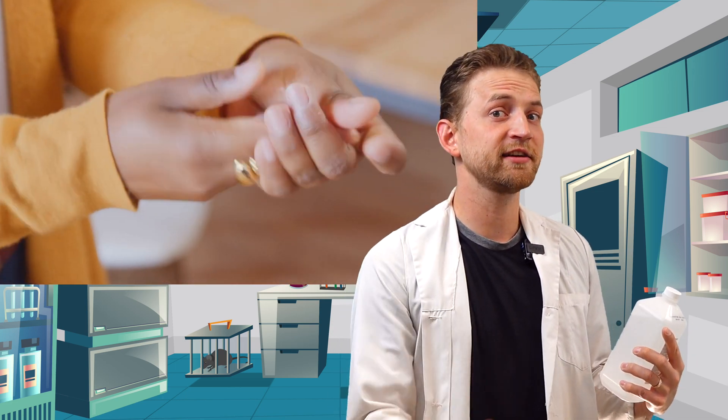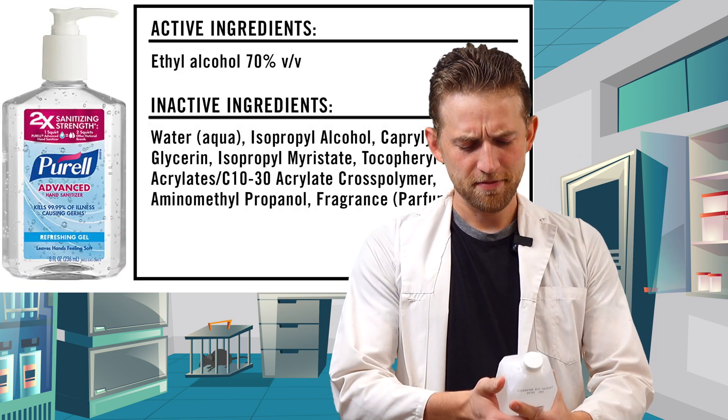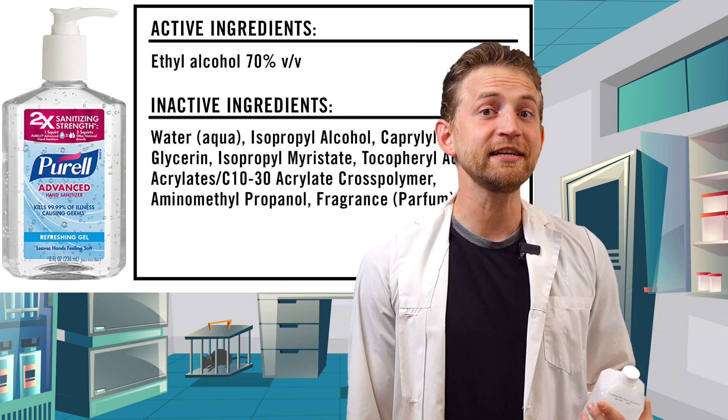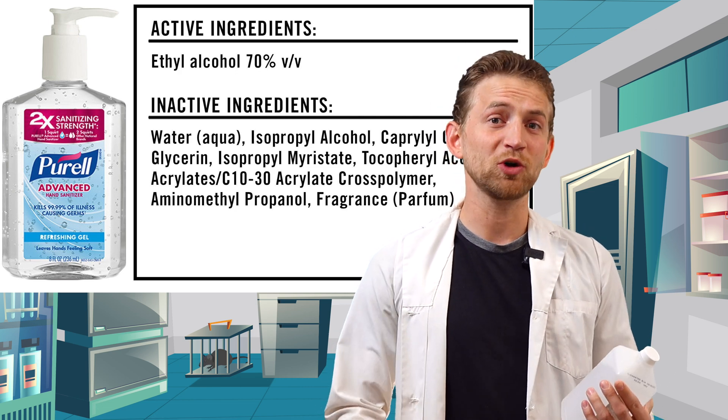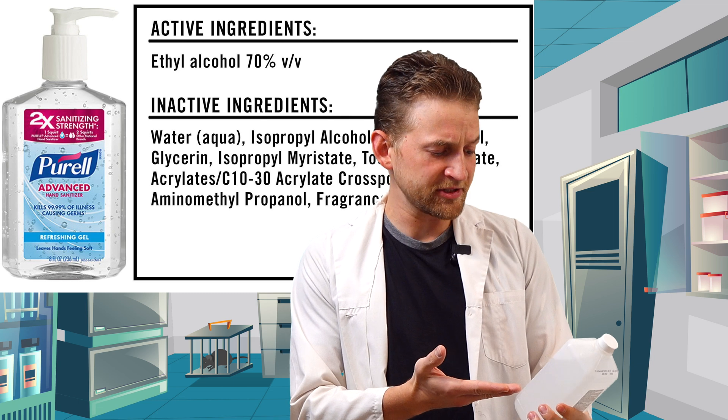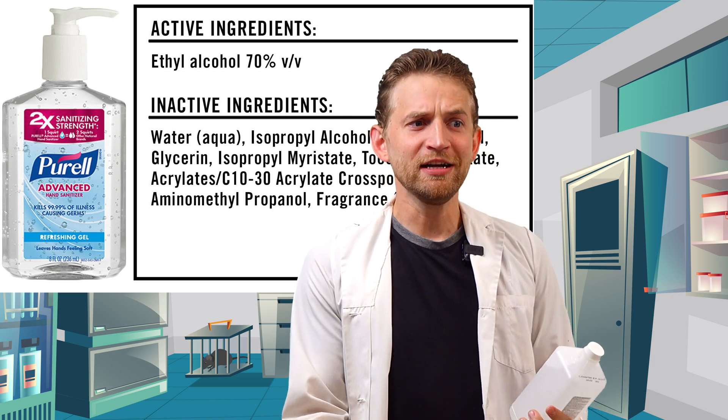Now, do you have hand sanitizer in your home? You probably do because in this day and age it's quite common to have hand sanitizer and it's good to use it. But if you look at the ingredients, you'll probably notice that it contains 70% alcohol, either ethyl alcohol or isopropyl alcohol. What does that number mean? If it's only like 60% or 70% alcohol, does that mean we could make a super hand sanitizer by upping the alcohol content to 90% or 100% alcohol?